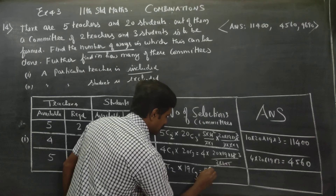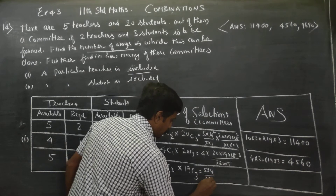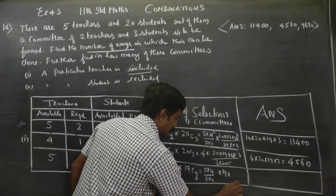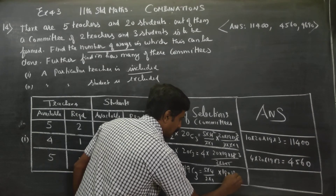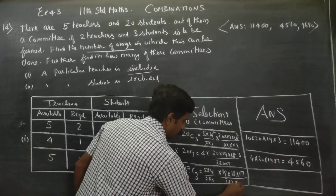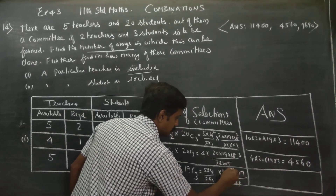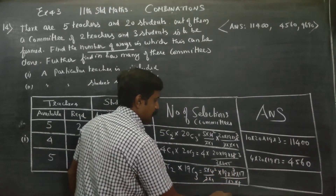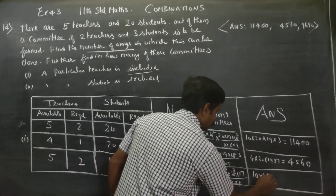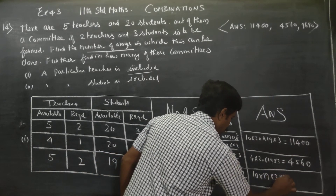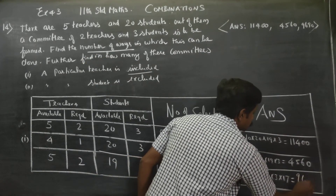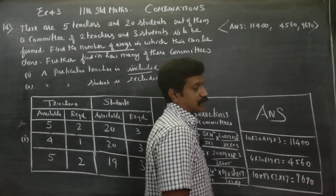5C2 can be written as 5 into 4 by 2 into 1. 19C3 can be written as 19 into 18 into 17 by 3 into 2 into 1. After cancellation, you get 10 into 19 into 3 into 17, and if you multiply this, you will be getting 9690 as the answer.